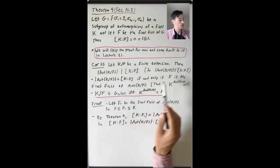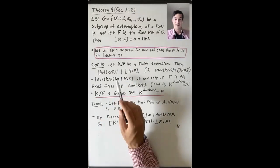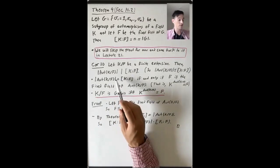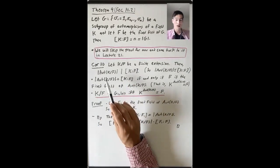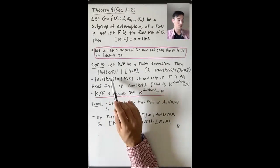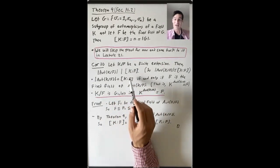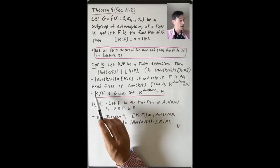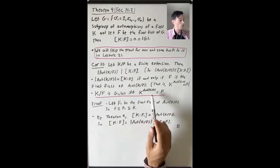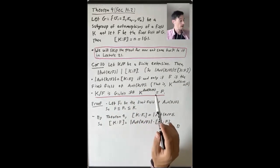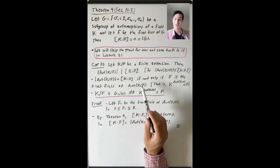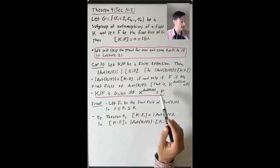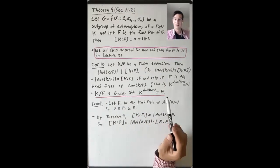What we'll deduce from this: remember, our definition for a finite extension K over F to be Galois is that the order of the group of automorphisms of K fixing F equals the degree of K over F. So what we're seeing is that K over F is Galois if and only if the fixed field of the group of automorphisms of K fixing F is F itself.